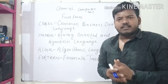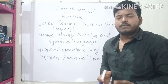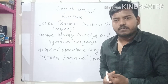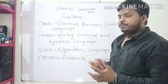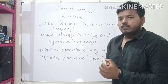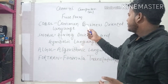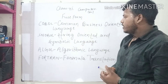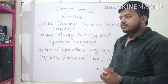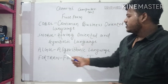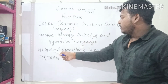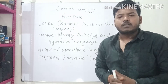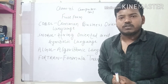For Second Generation languages, let's look at the full forms. Cobol stands for Common Business Oriented Language. Snobol stands for String Oriented and Symbolic Language. Algol stands for Algorithmic Language. And Fortran stands for Formula Translation.